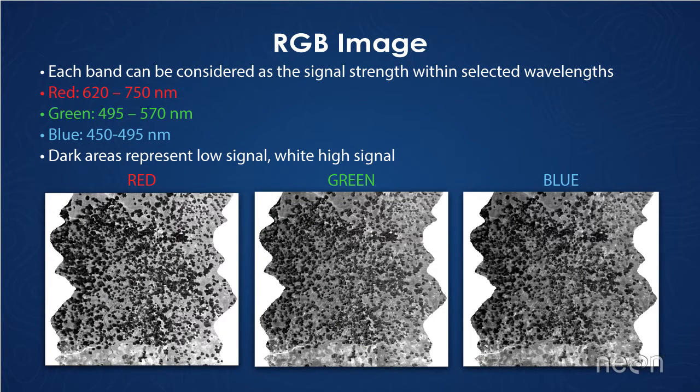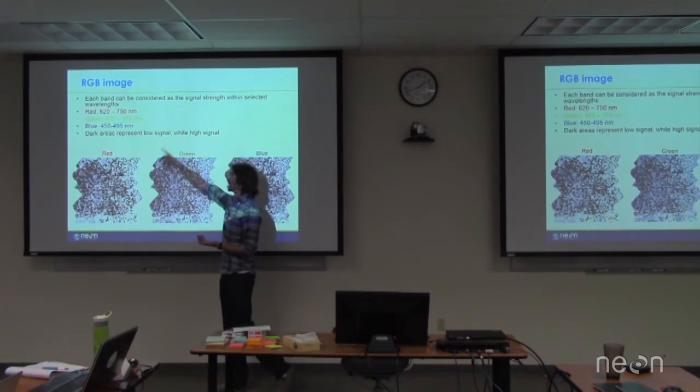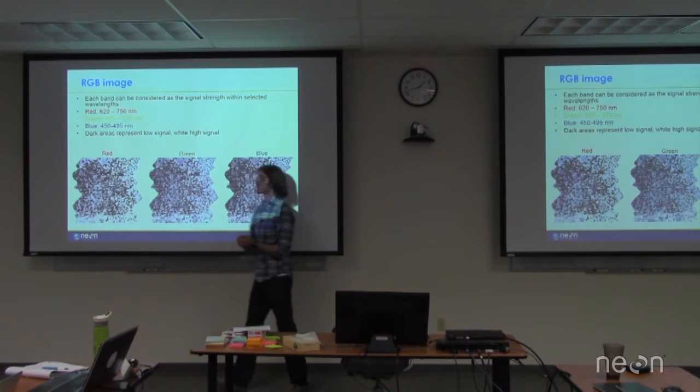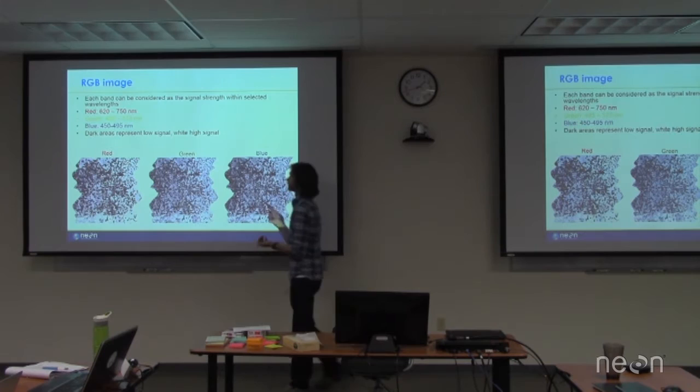So we can look at the actual wavelengths for each portion or different portions of the visible spectrum. I've got red, green, and blue up there. Red, for example, goes between 620 to 750 nanometers. We have in our digital cameras that take this information, a sensor that figures out the signal strength for that portion of the spectrum. And it does that in the red, green, blue bands.